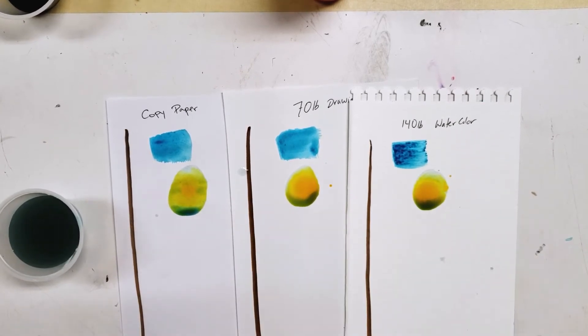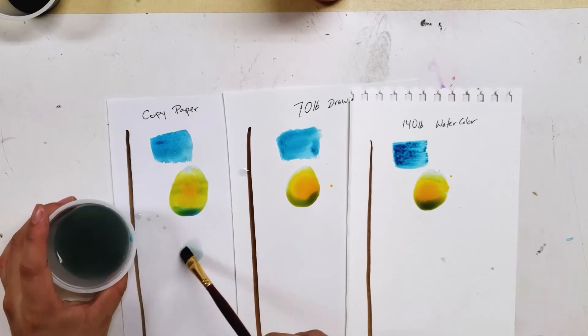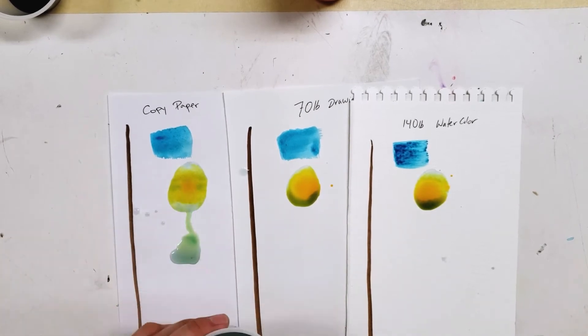Look at the copy paper and how the water seems to be dragging down. And look at the watercolor paper which seems to be holding its shape.